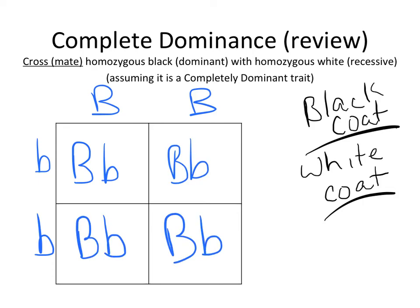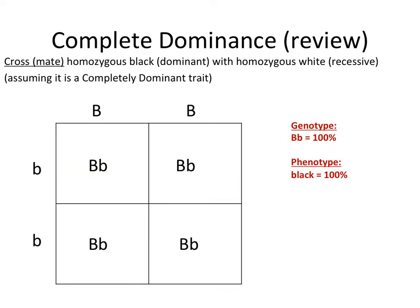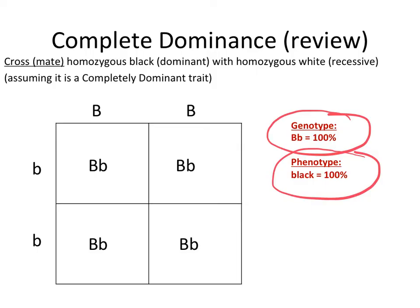Even though they may carry the recessive allele, all the offspring would show the dominant phenotype. 100% of the genotypes of the offspring would be heterozygous for black, and 100% of the phenotype would actually have the black coat color.